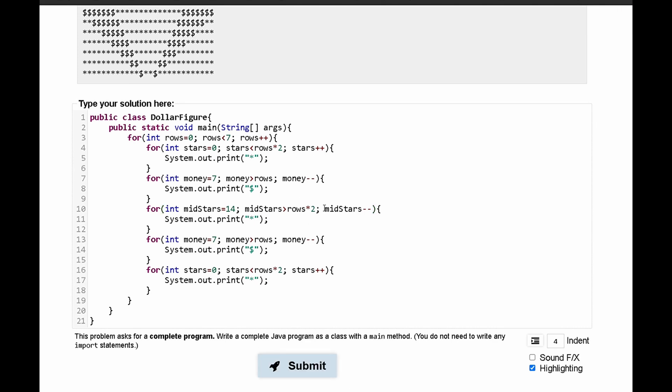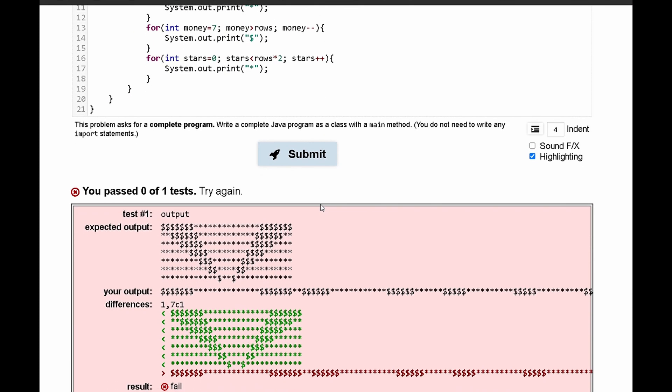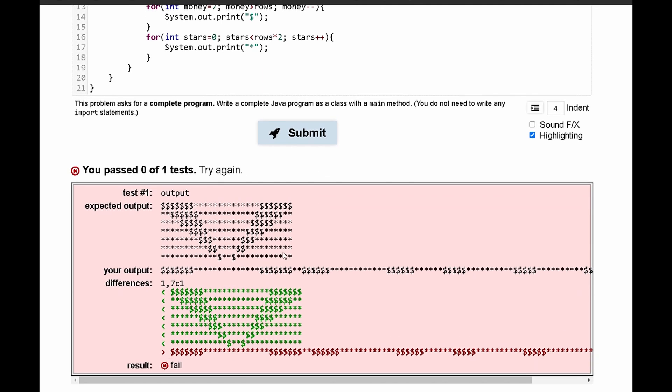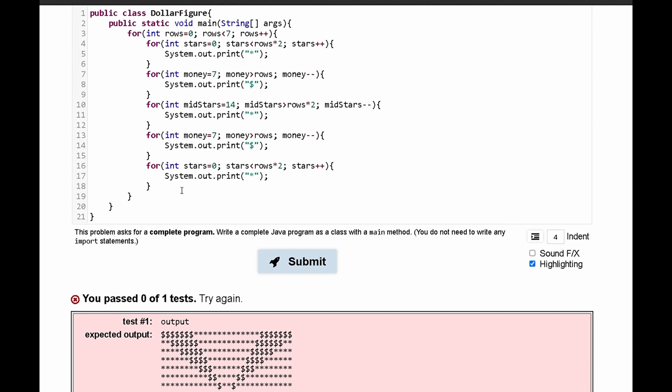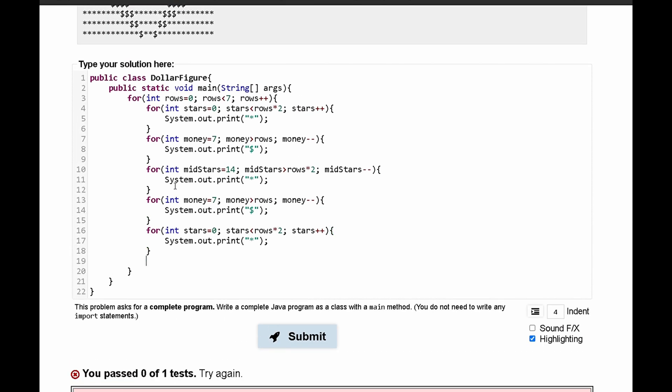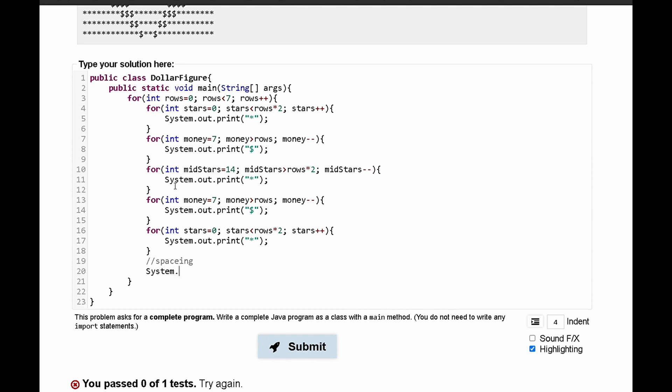The other ones, the stars, should be incrementing every single time. We have another error where all of our output is being printed on the same line. To do this we need a spacing line, which I always forget. We can write spacing and all we need here is a system.out.println.